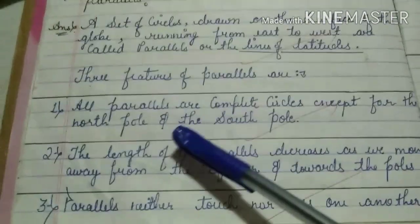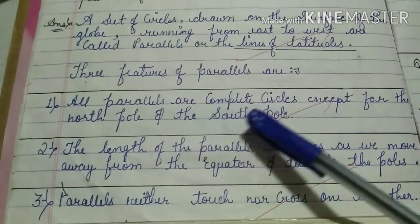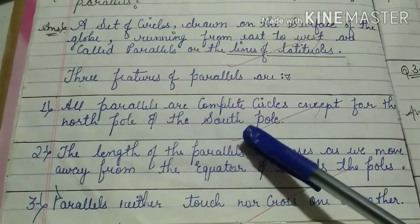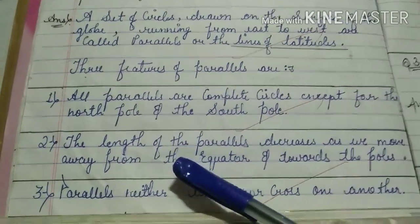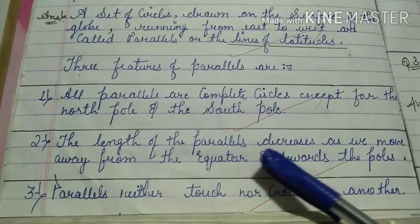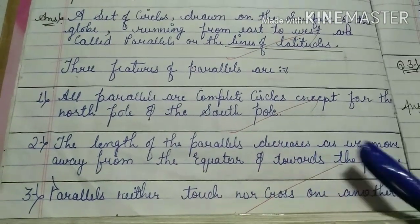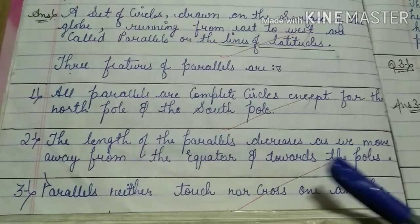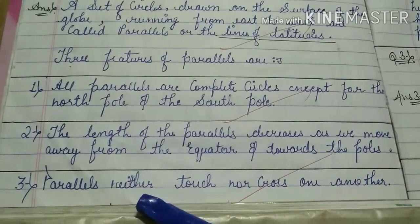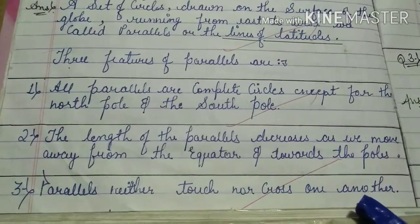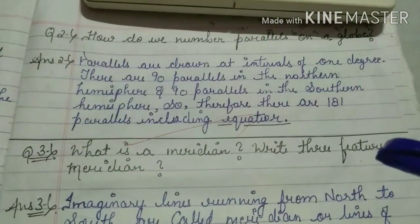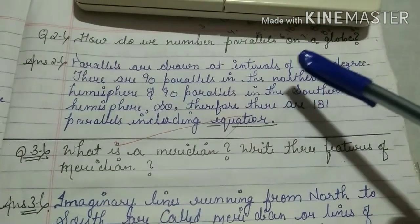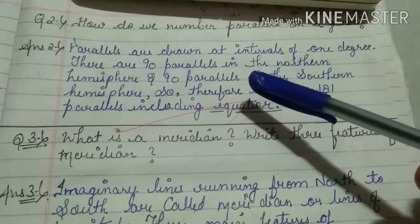Three features of parallels are: Number one, the parallels are complete circles except for the north pole and the south pole. Number two, the length of the parallels decreases as we move away from the equator towards the poles. Number three, parallels neither touch nor cross one another.